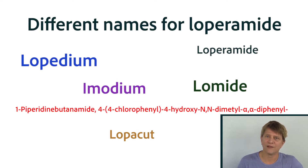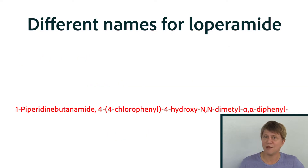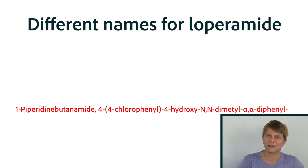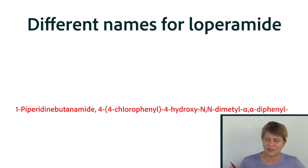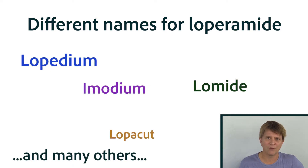If you know anything about loperamide, you may actually know it by one of its many different names. You may be wondering why I call it loperamide instead of one of those other names. This is the actual chemical name of loperamide. Nobody actually uses the chemical name except for scientists working in the laboratory trying to synthesize the medication. So just scratch that one off your list. But a lot of people remember the brand names, and one of the common brand names of loperamide is Imodium.